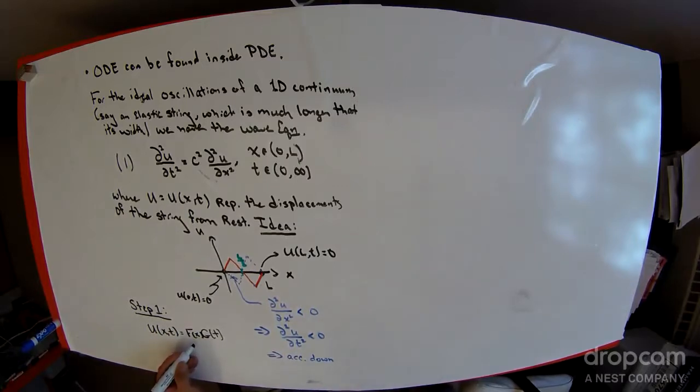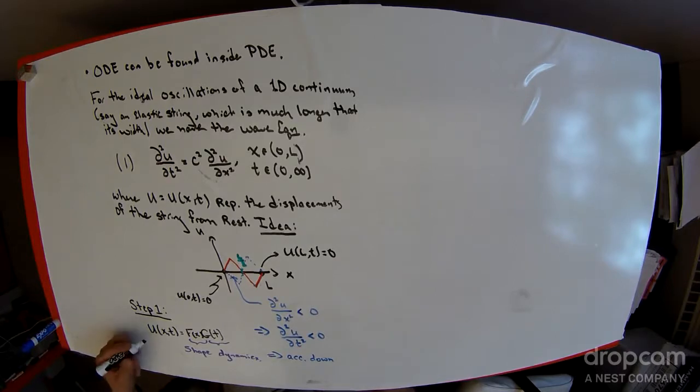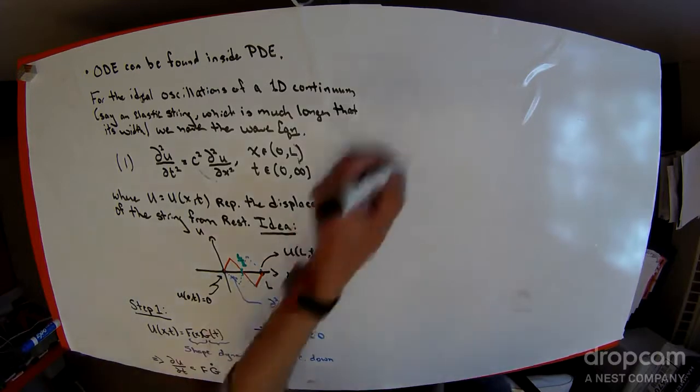Why would you want to do that? The idea here is that you're expecting the spatial shape represented by f(x) to somehow decouple from its temporal dynamics. So this specifies a shape and this specifies the dynamics. There's no reason this has to be right, but as you might notice from our differential equations class, we make guesses and hope for the best.